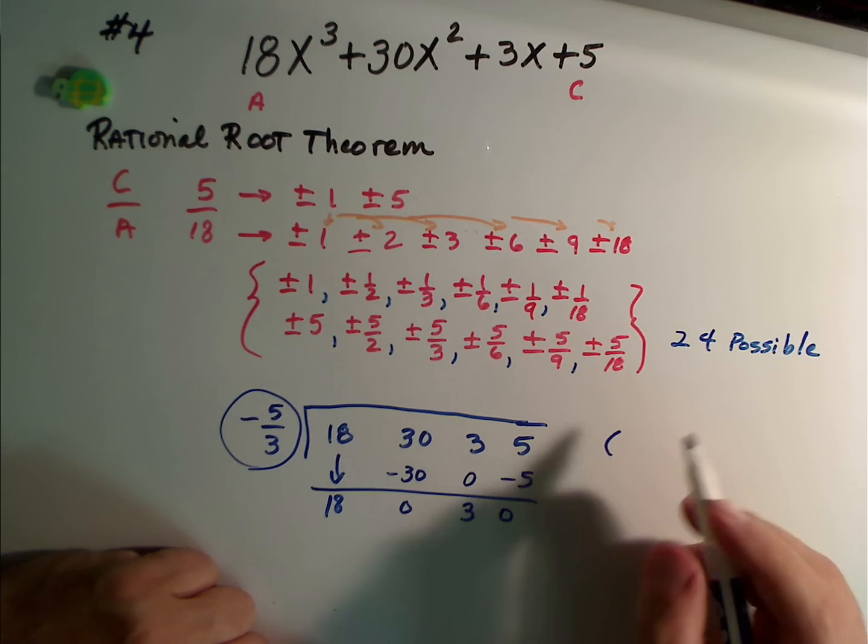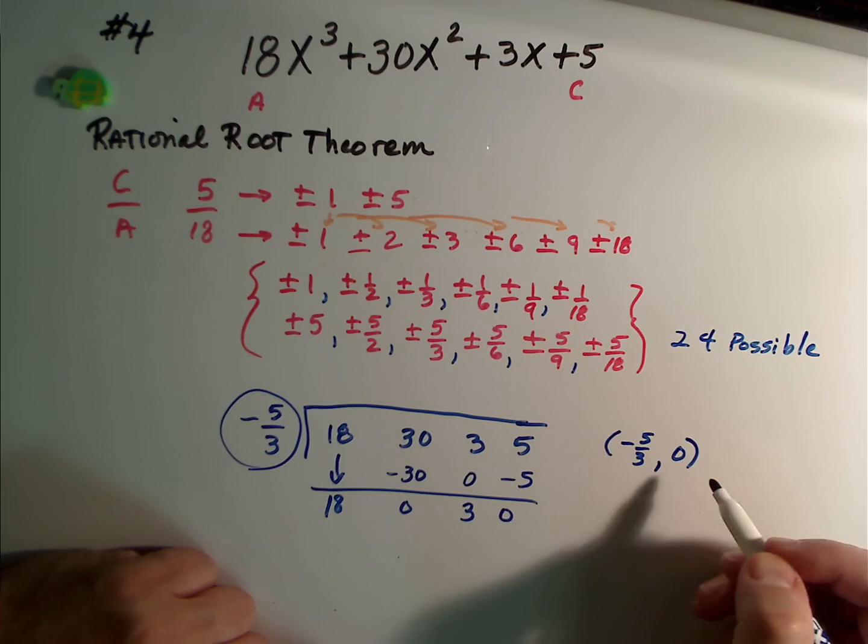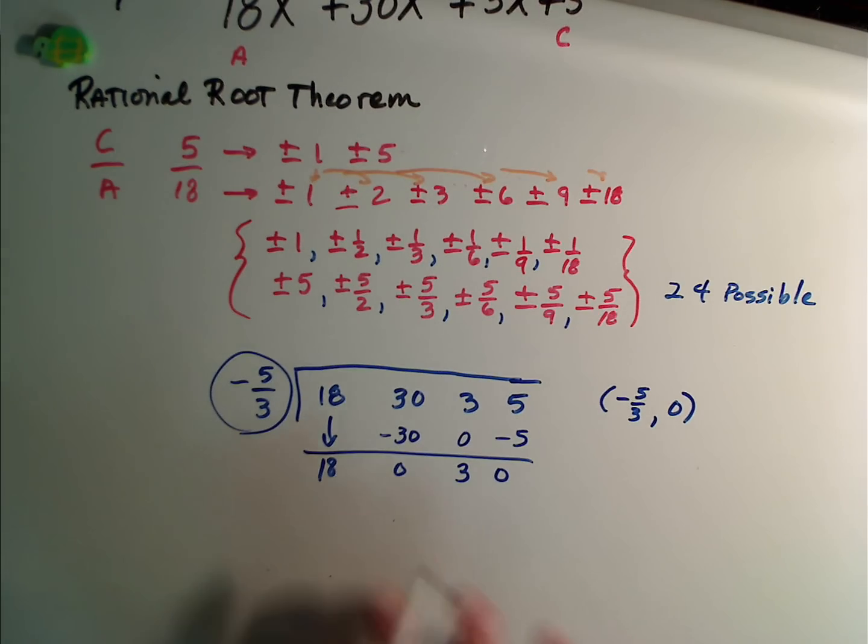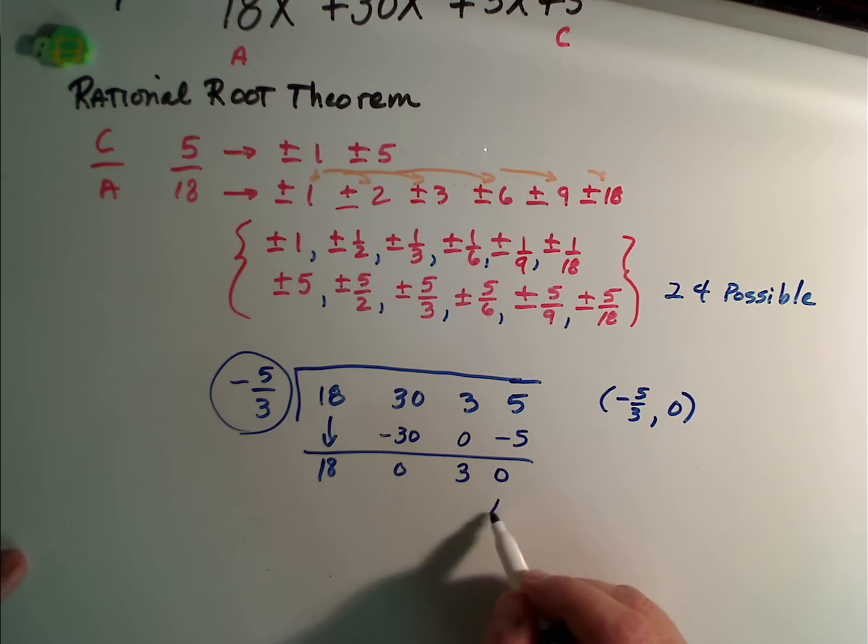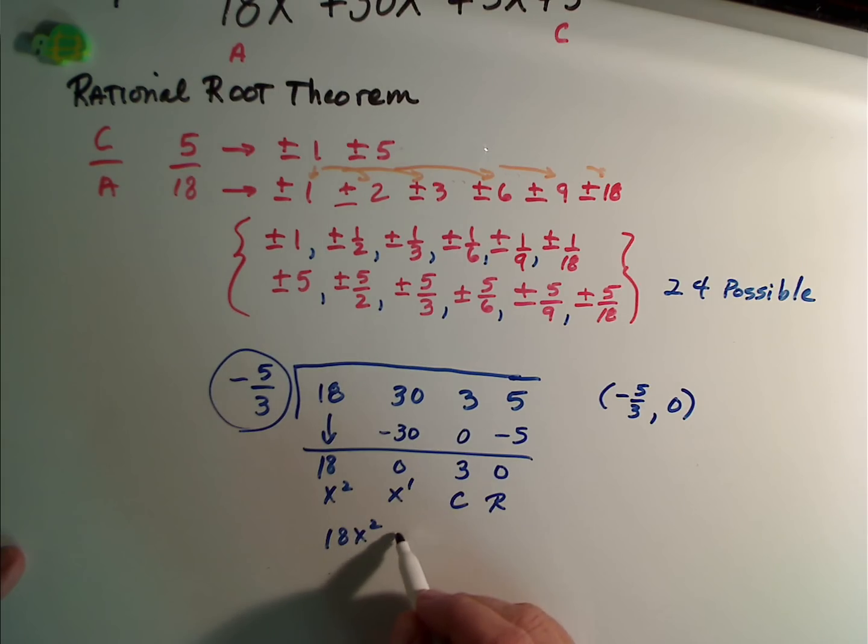One of our roots is when we put in negative 5/3, we get out a 0. This is one of our roots. The other thing that we end up with is this, which, if you'll recall, remainder constant x^1, x^2. This is 18x^2 plus 3 at your constant. This is what we are down to now. All I have to do is set this to 0, and I can find our remaining roots.